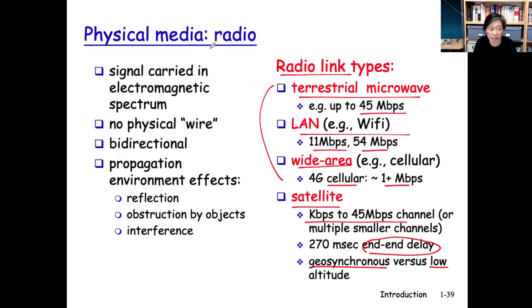So radio links are very special. Essentially, we are sending bits through these electromagnetic waves. There are no physical wires, so it's called unguided media. Data can go bidirectional—well, in fact, omnidirectional.